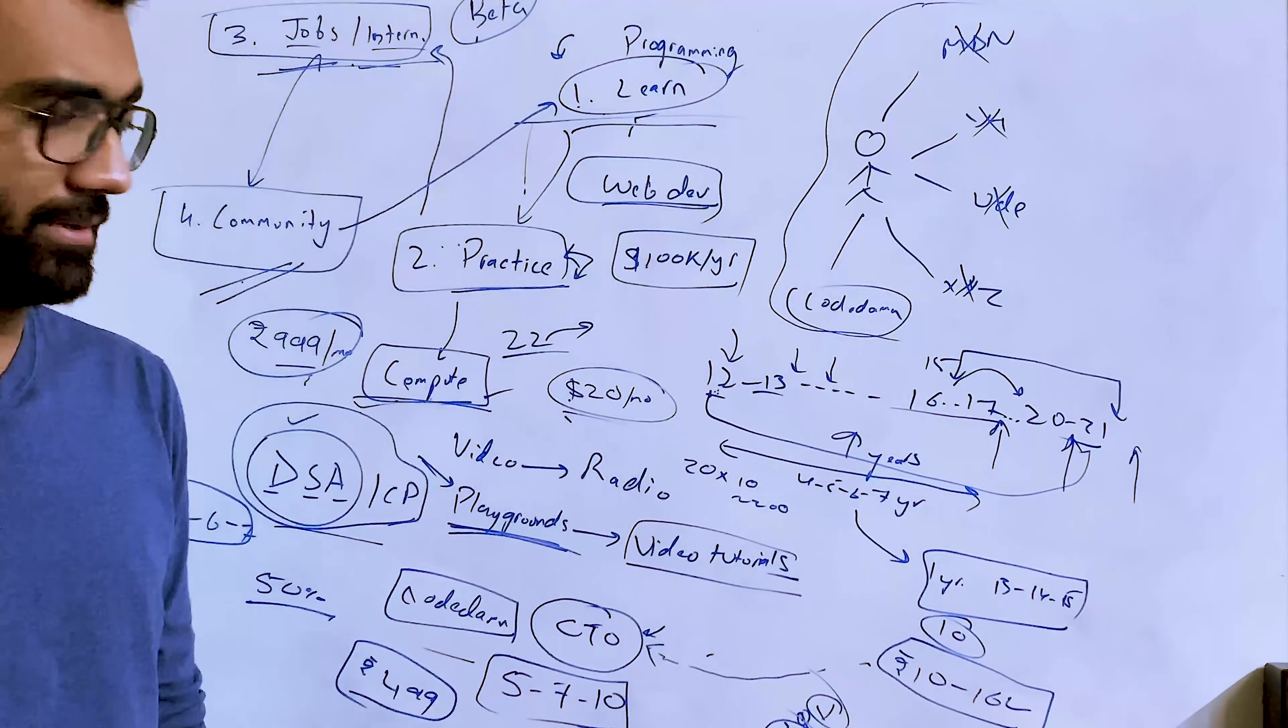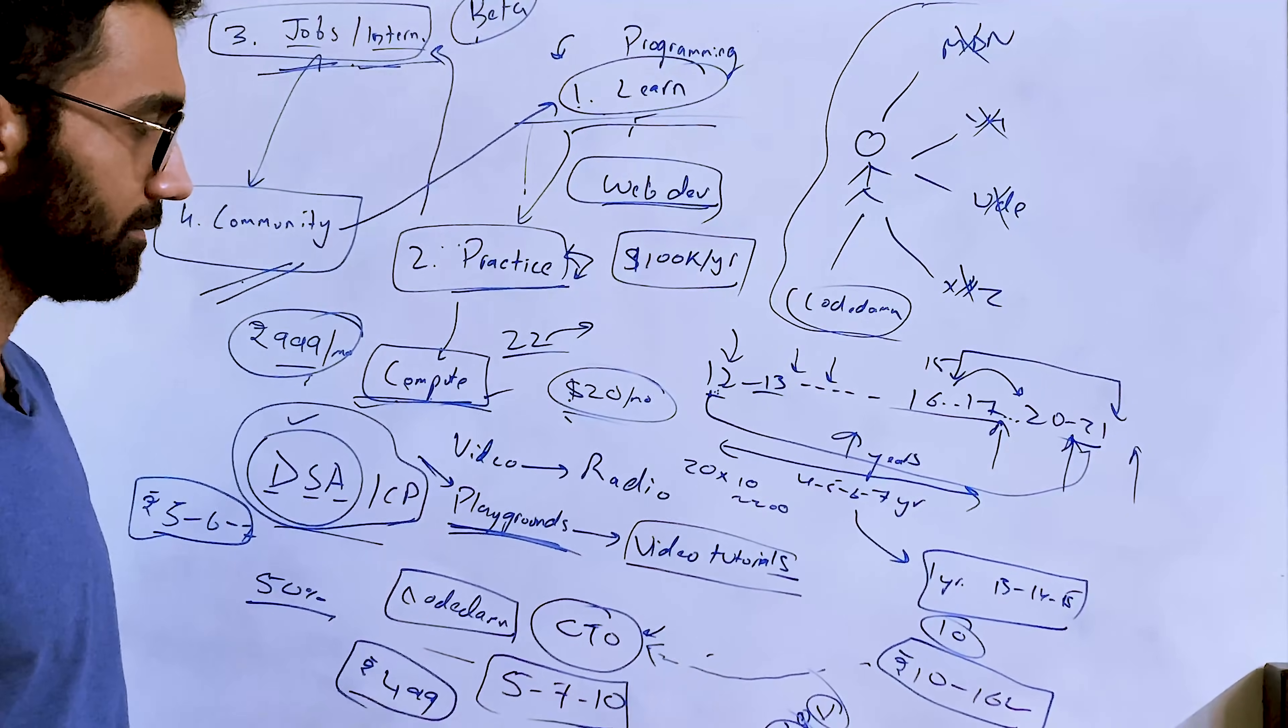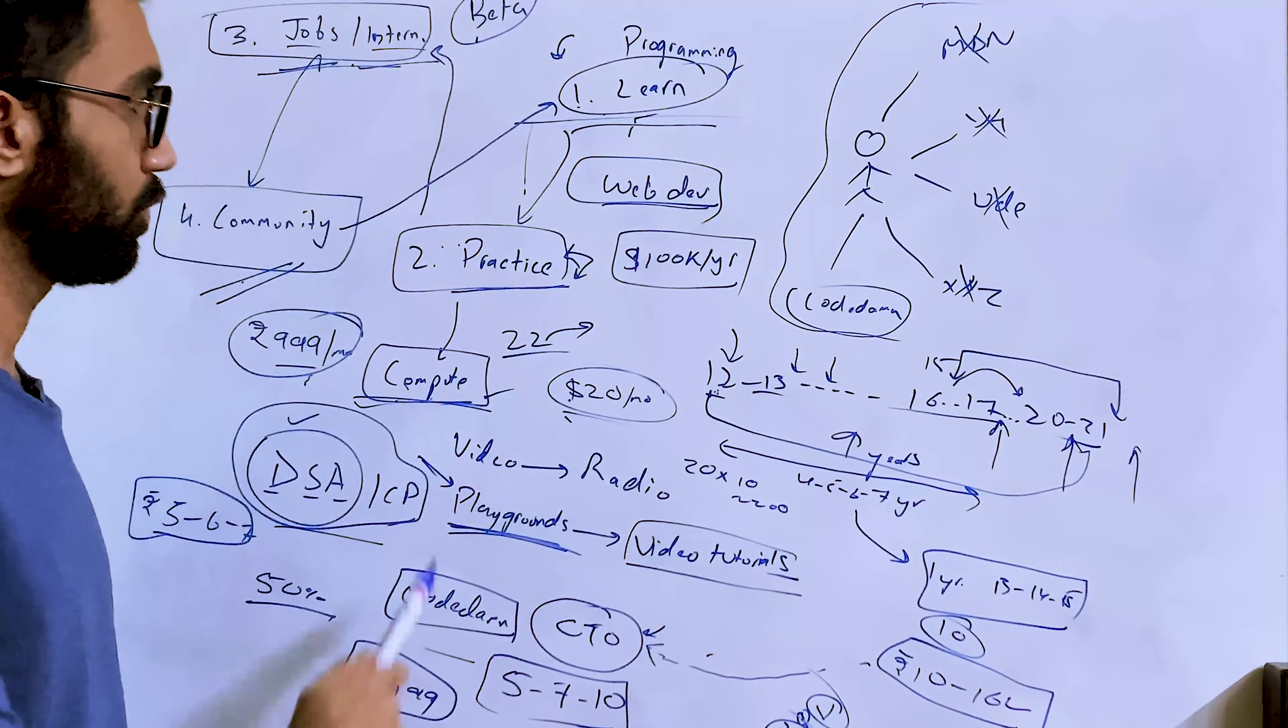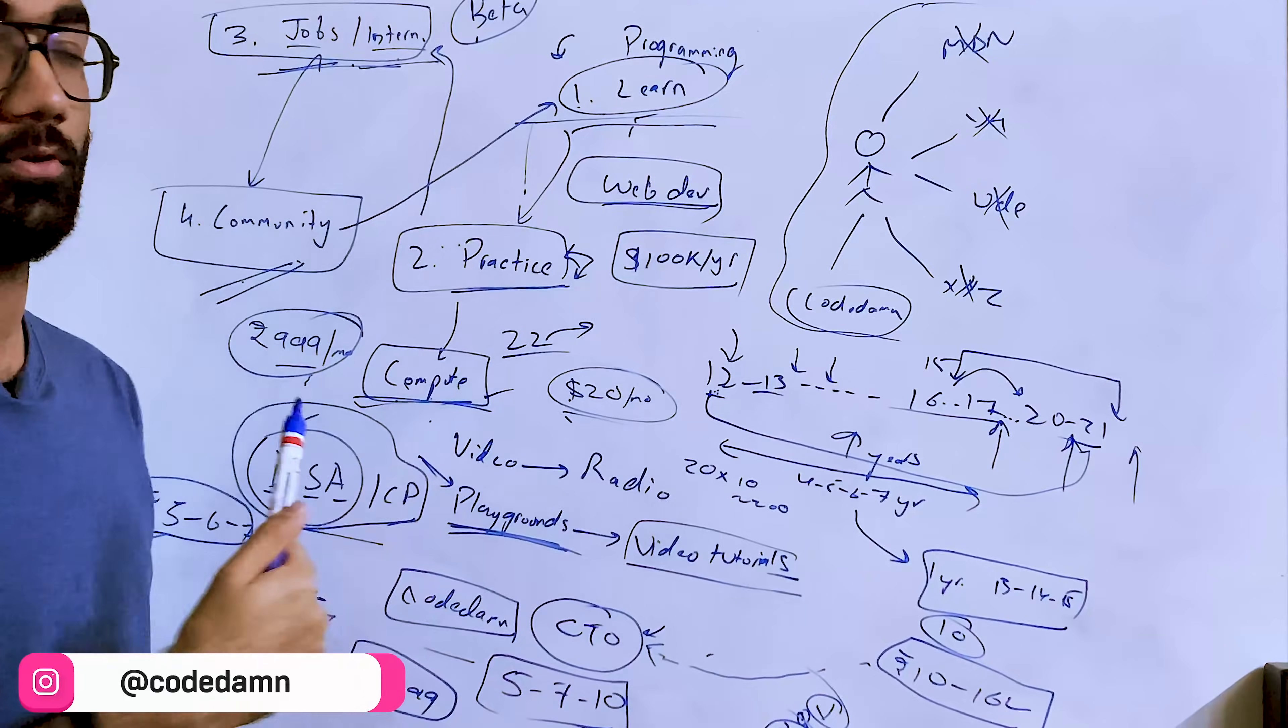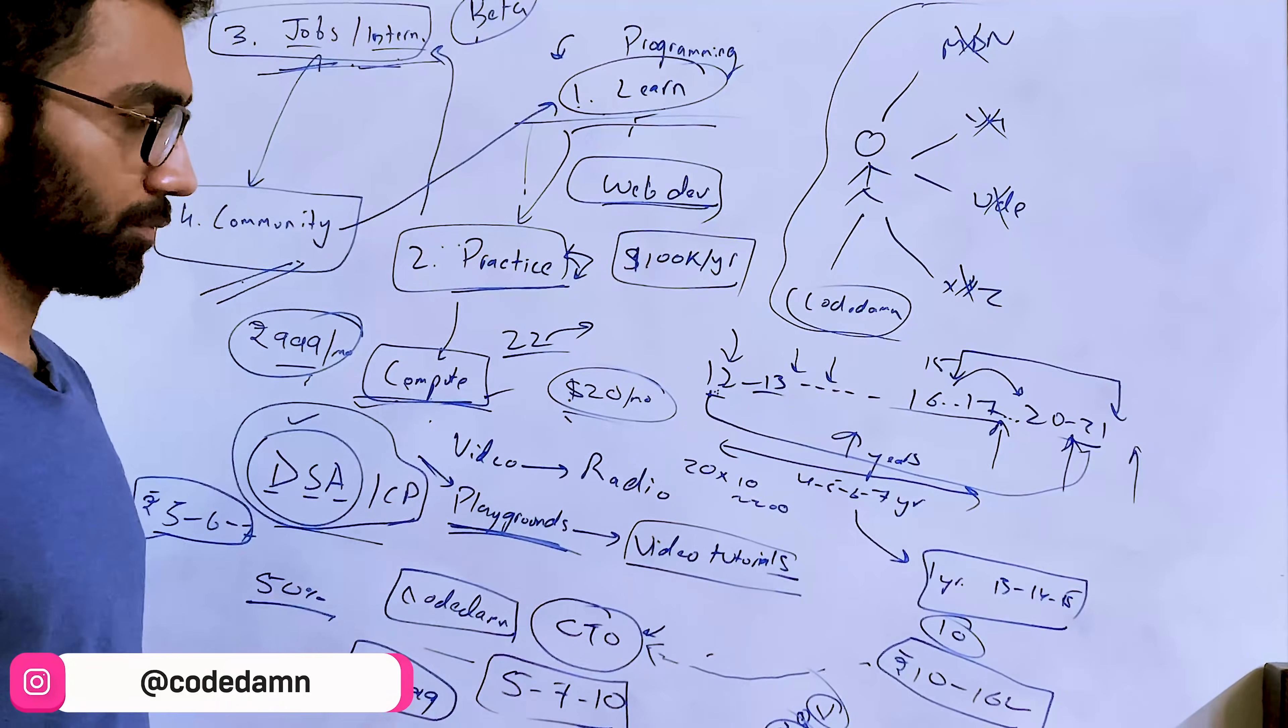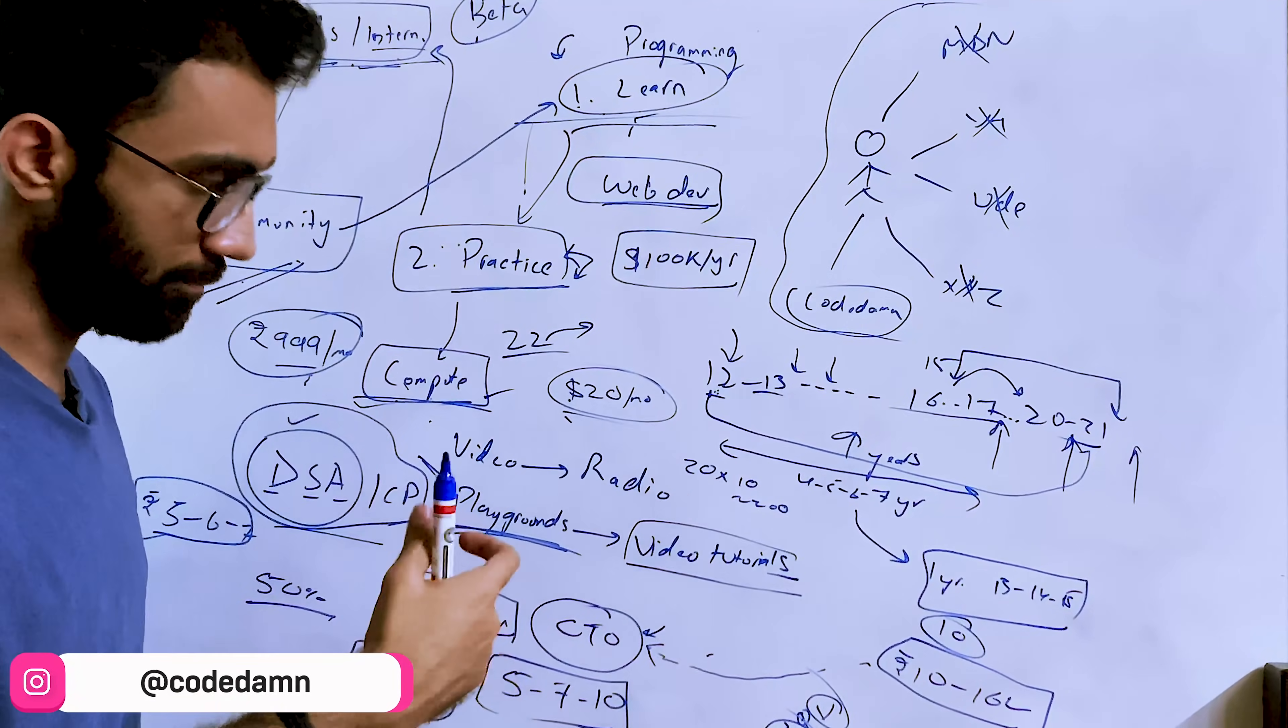In the US, I think the average salary is $100k per year for a front-end full stack developer. In India, for example, you can easily land a job anywhere between 10 to 16 lakh CTC, which is what we say, 16 lakh per year. You're paying 10,000 for 10 months - that seems like a fair deal to me.